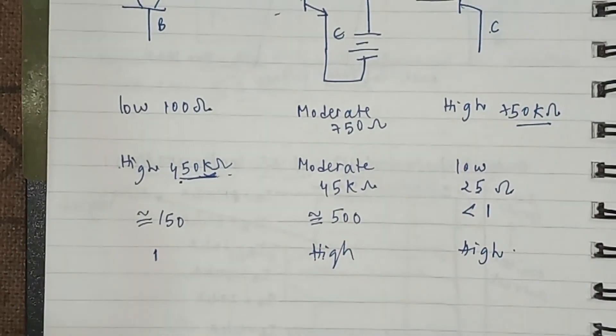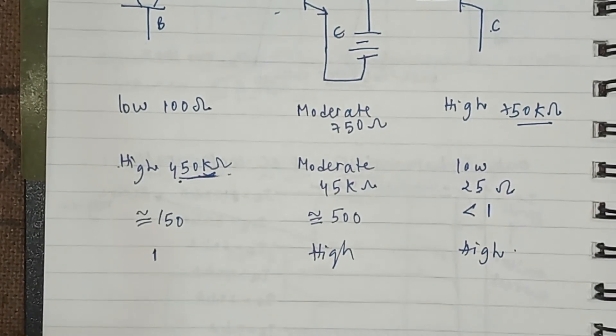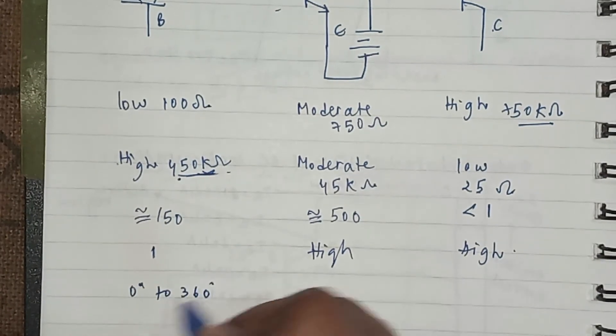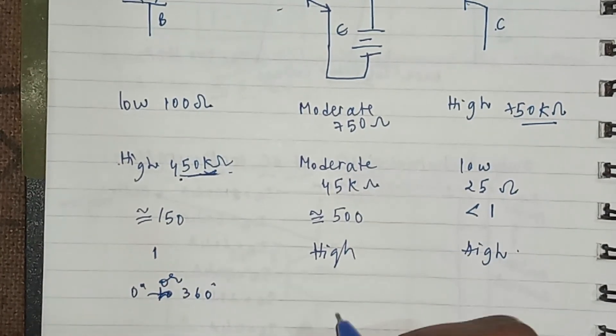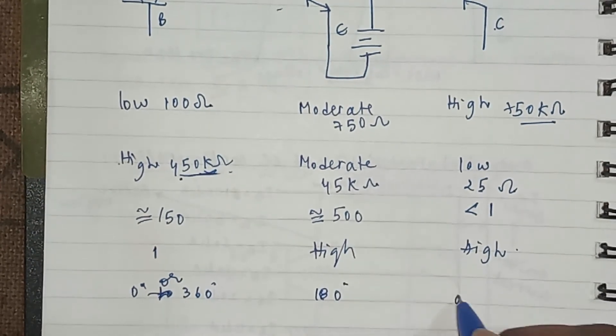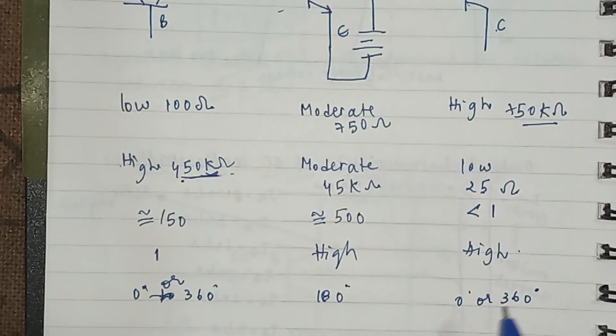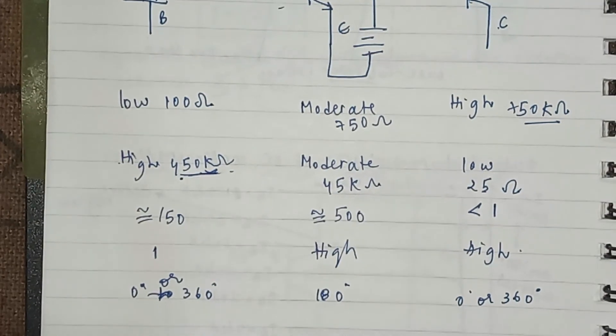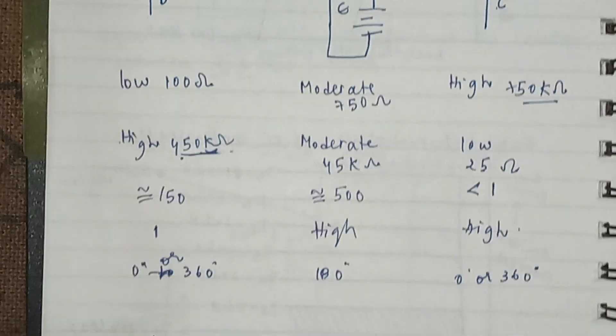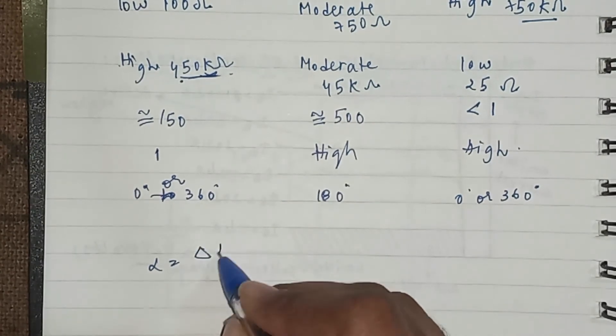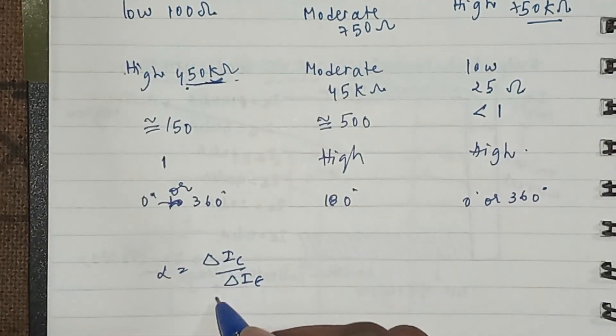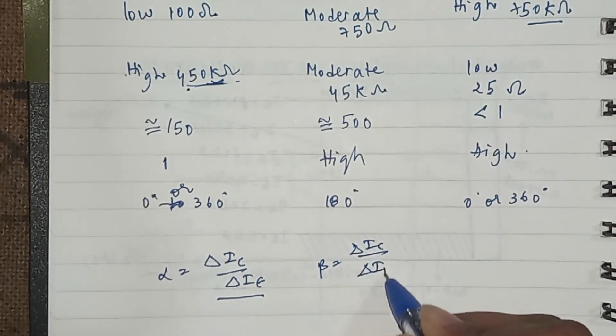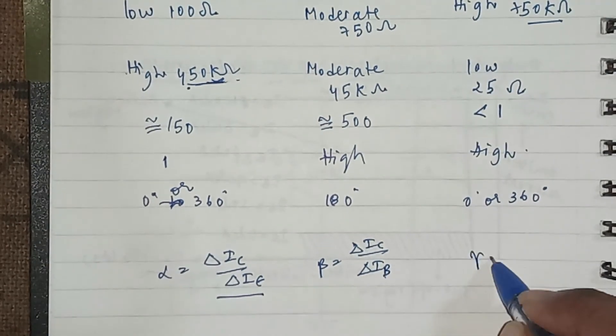The phase shift between input and output voltages is 0 to 360 degrees in the CB configuration. It's 180 degrees in CE and 0 or 360 in CC. The current amplification factor alpha is equal to delta IC by delta IE in case of CB, and beta is equal to delta IC by delta IB for CE. And gamma is delta IE by delta IB for CC.